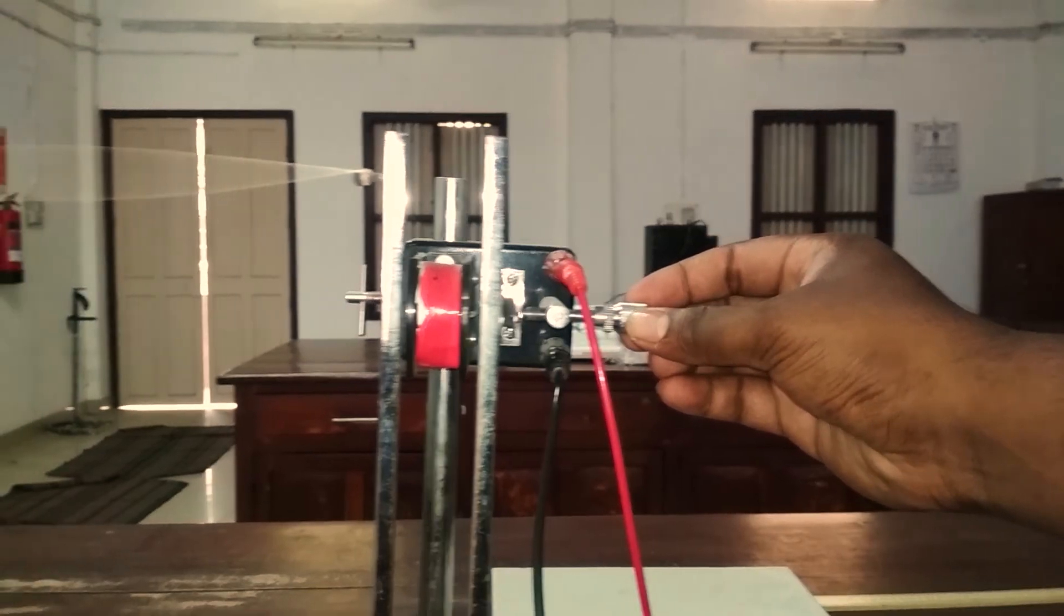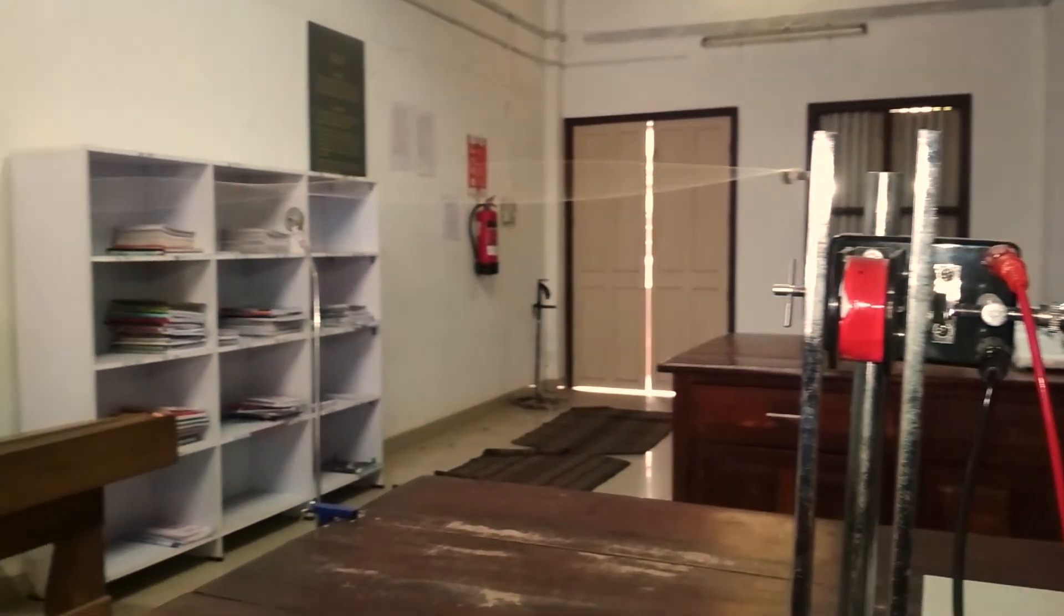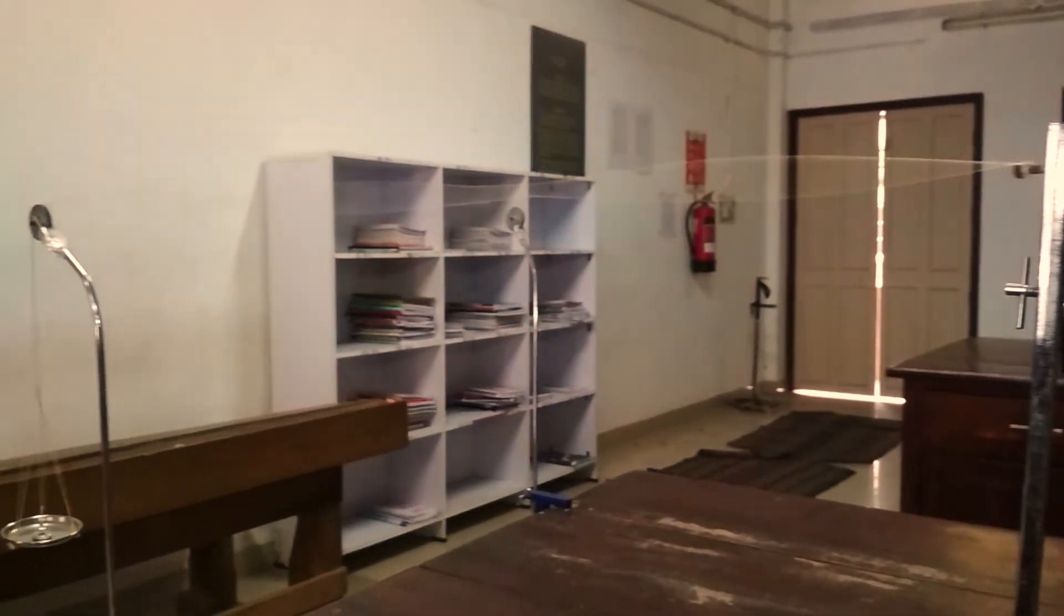We can adjust the string tension by changing the weight in the pan slowly and gradually. Add milligrams of weight so that nodes are reduced to points.